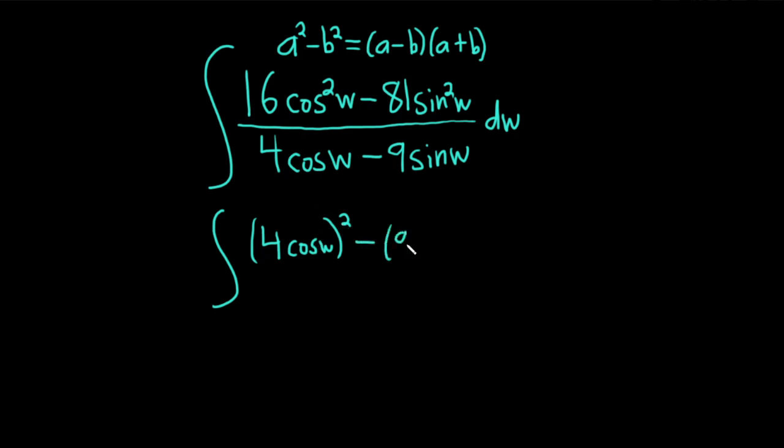Minus 9 sine w squared. Same thing, because 9 squared is 81 and then sine squared is sine squared. All divided by 4 cosine w minus 9 sine w dw.